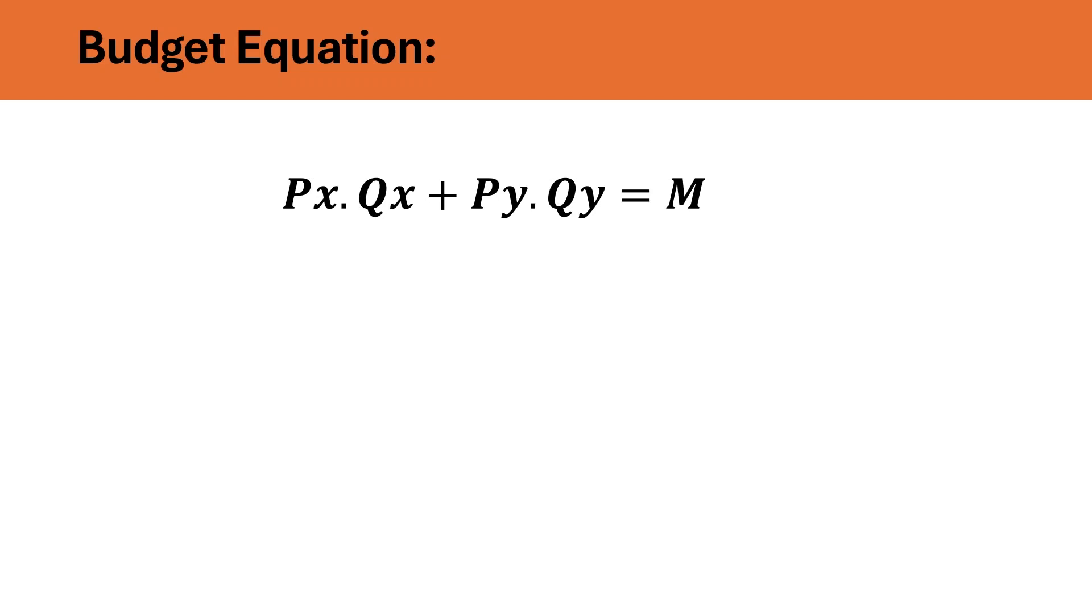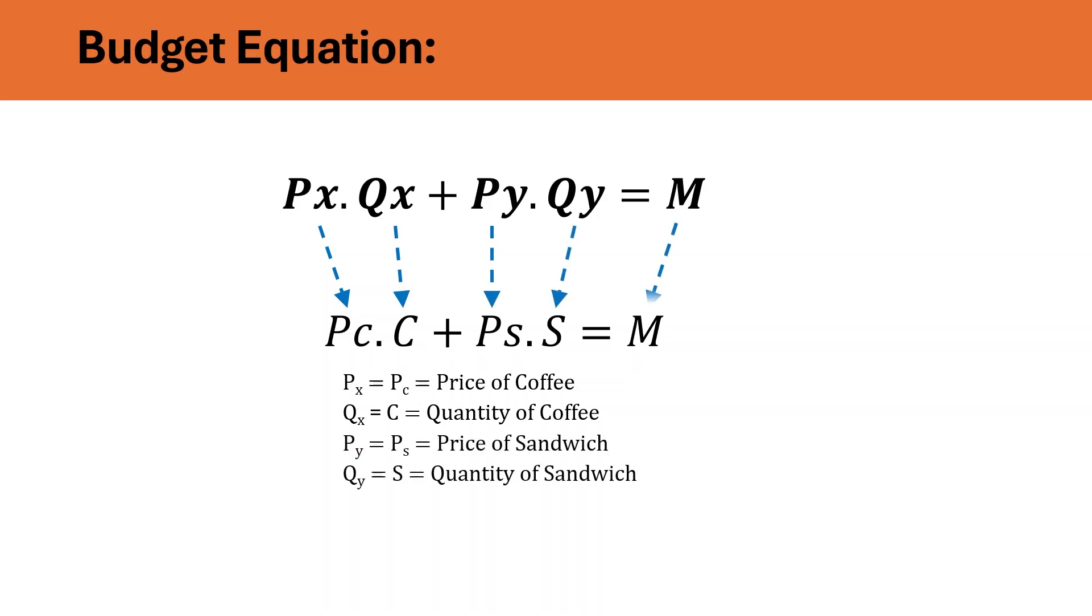In our example of coffee and sandwiches, the budget equation would be Pc into C plus Ps into S is equal to M, where Pc stands for price of coffee, C stands for quantity of coffee, Ps stands for price of sandwich, S stands for quantity of sandwich, and M stands for total budget.